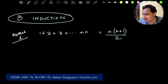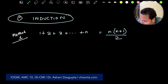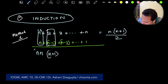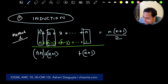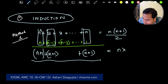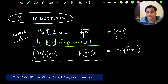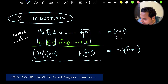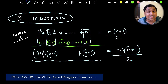Method 1 is what Gauss did — one of the greatest mathematicians of all time. He wrote down the numbers in the opposite order and added up the columns. Each column adds up to n+1, and there are n such columns, giving n(n+1). But since he added everything twice across two rows, you divide by 2. That gives n(n+1)/2. This is the deductive method.